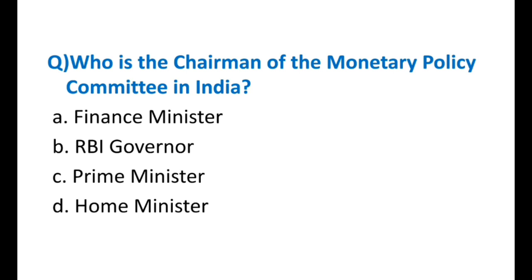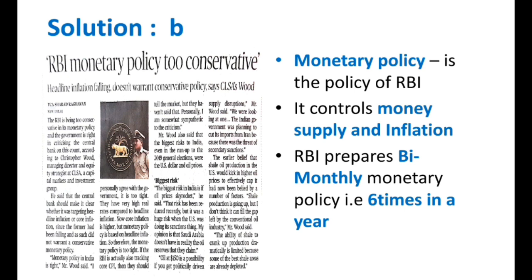In India, who is the chairman of the Monetary Policy Committee? Options — Finance Minister, RBI Governor, Prime Minister, or Home Minister. The answer is B — the RBI Governor. The present RBI Governor Urjit Patel chairs the Monetary Policy Committee. Monetary policy is the policy of the RBI — it controls money supply and inflation. The RBI prepares a bimonthly monetary policy, that is six times in a year. A question can be framed: how many times in a year does the RBI prepare monetary policy? — six times.